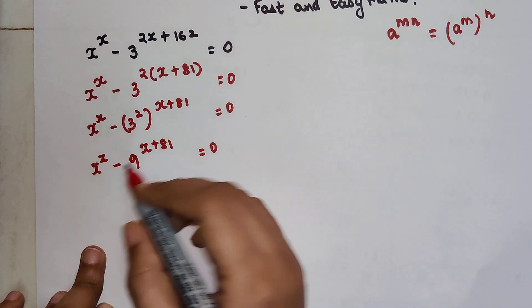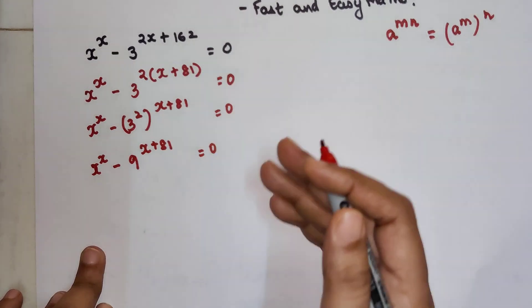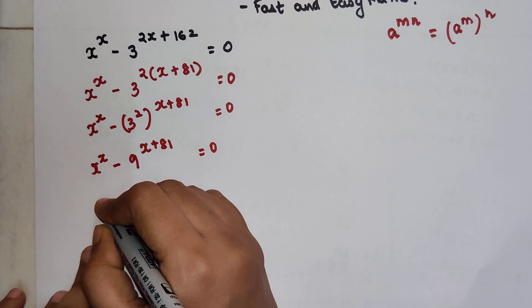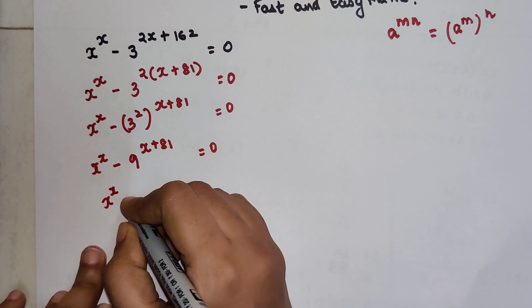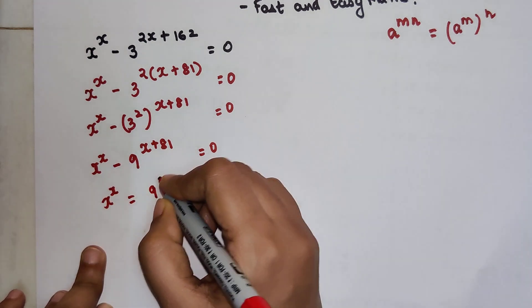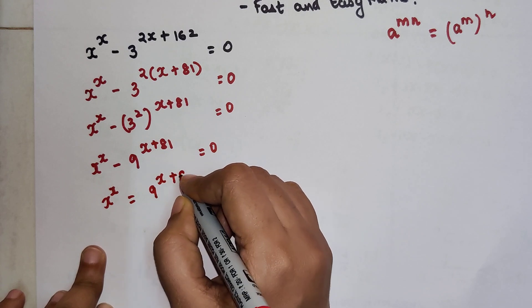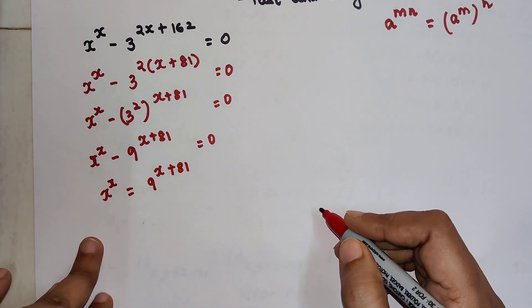So now what we can do is shift this to the other side because other than that, we have no idea what to do further. So this equals 9 raised to x plus 81.